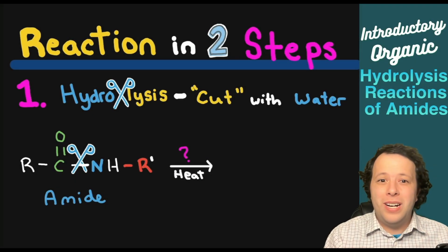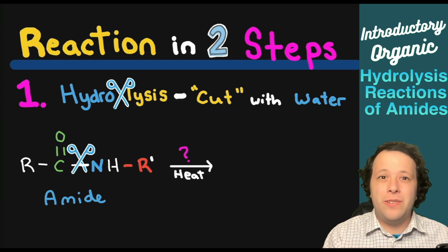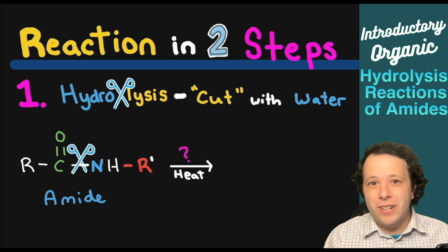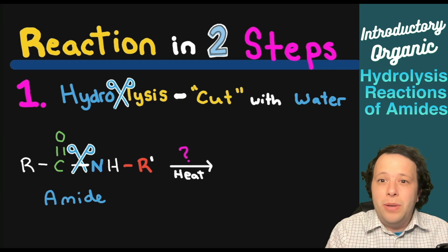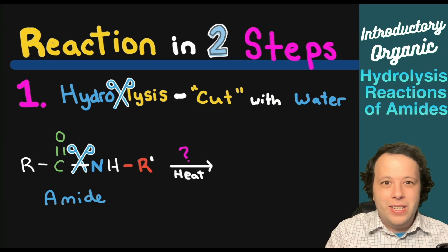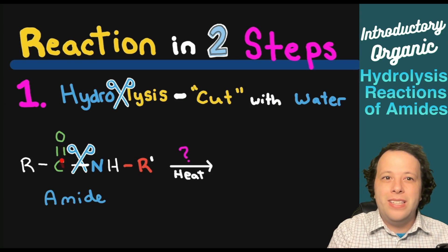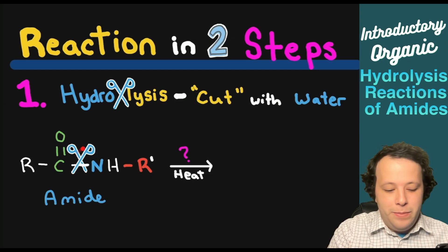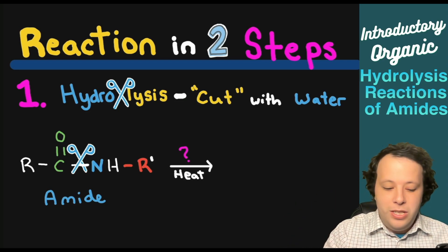In order to do a hydrolysis in two steps, the first part has to do with the name hydrolysis — 'hydro' means water and 'lysis' means to cut, which you commonly see in a lot of biological practices. So we're going to cut with water. If you think of the structure of water, we're going to be looking at an amide and cutting right in between the C double bond O and the nitrogen portion of the amide — using our little water scissors.